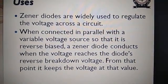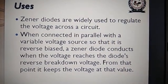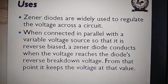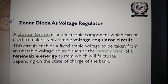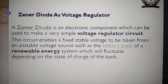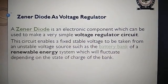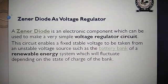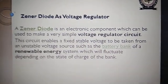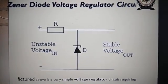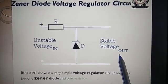When connected in parallel with a variable voltage source in reverse bias, a Zener diode conducts when the voltage reaches the diode's reverse breakdown voltage and keeps the voltage at that value. A Zener diode can be used to make a very simple voltage regulator circuit, enabling a fixed, stable voltage to be taken from an unstable voltage source such as a battery bank of a renewable energy system. The unstable voltage is applied at the input, and you get a stable voltage output.